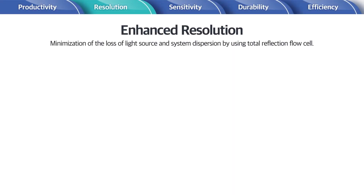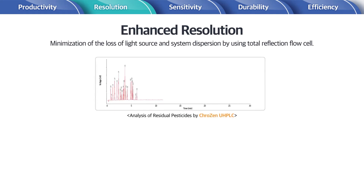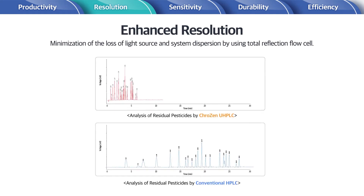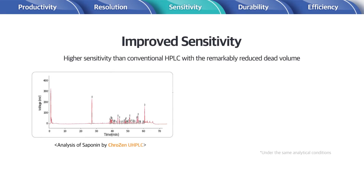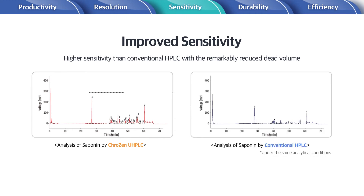Enhanced resolution. You get enhanced resolution because of the minimized loss of light source and system dispersion by using a total reflection flow cell. Improved sensitivity. Remarkably reduced dead volume enables UHPLC to generate improved sensitivity.